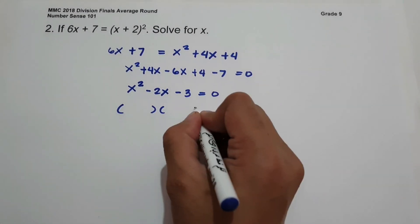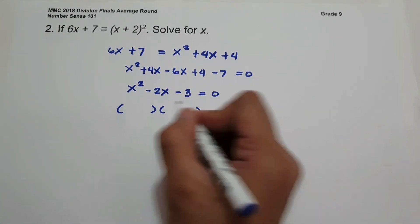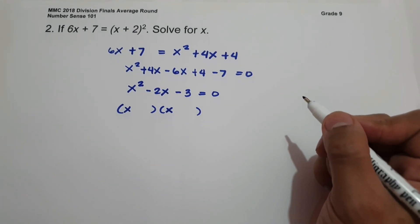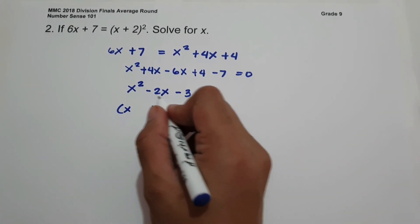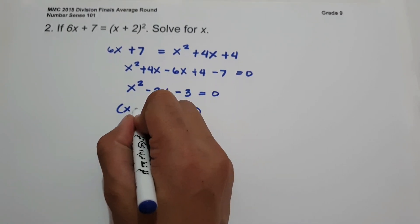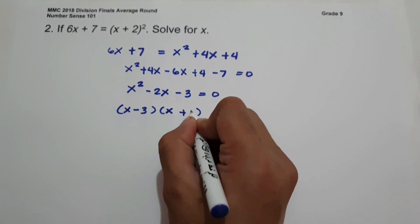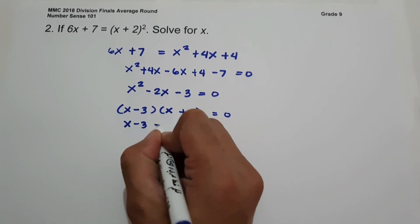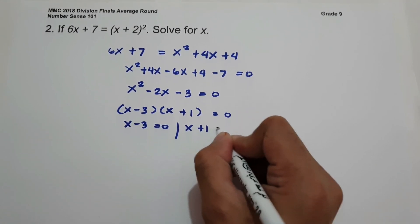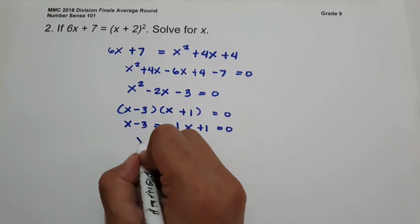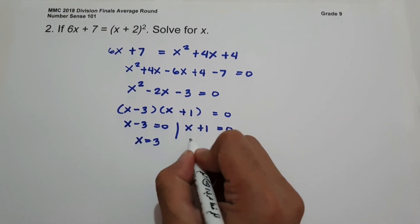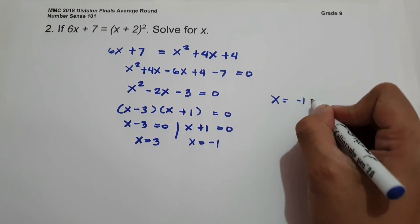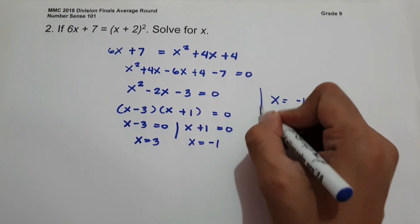Finding the factors: the factors of x squared are x and x, and we need two numbers that multiply to give negative 3 and add to give negative 2 — those are negative 3 and positive 1. Setting each factor to zero: x minus 3 equals 0 gives x equals 3, and x plus 1 equals 0 gives x equals negative 1. So the values of x are negative 1 and 3. This will be our answer.